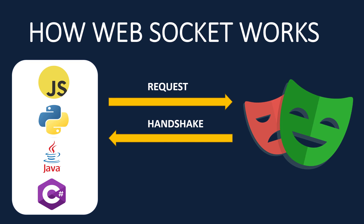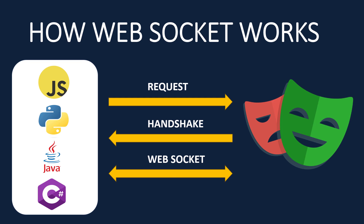It will create a handshake between the client, making it a two-way traffic channel — this is where WebSocket comes in. Basically, you send a request using your programming language, Playwright does a handshake, and after that it creates a permanent two-way connection. After this, you don't need to establish another connection.